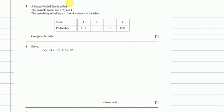Now let's see question number 5. A biased dice is rolled. The possible scores are 1, 2, 3 or 4. The probability of rolling are shown in the table.